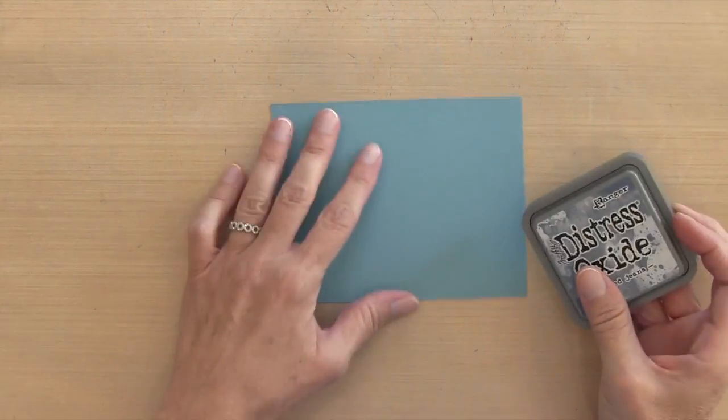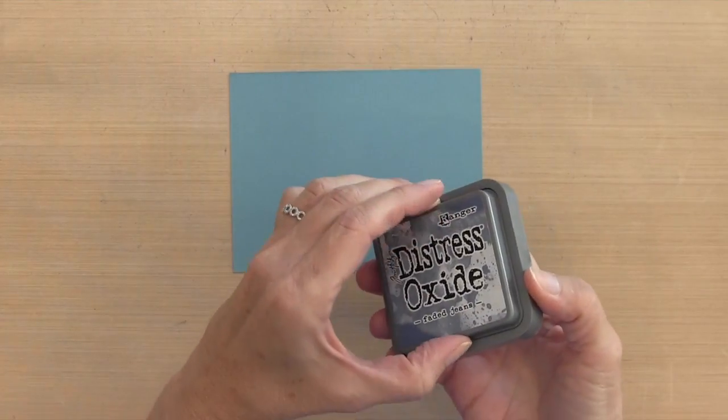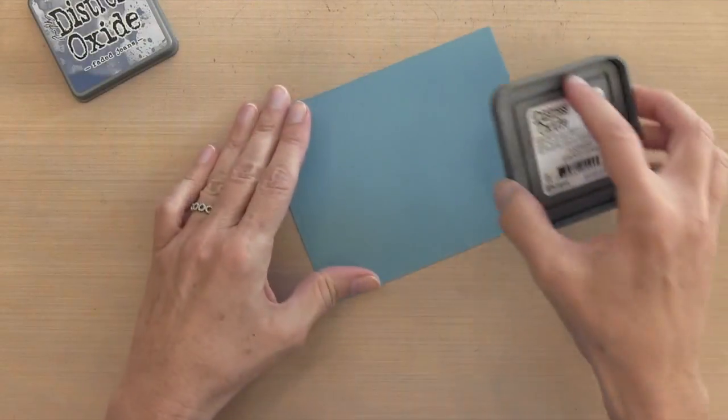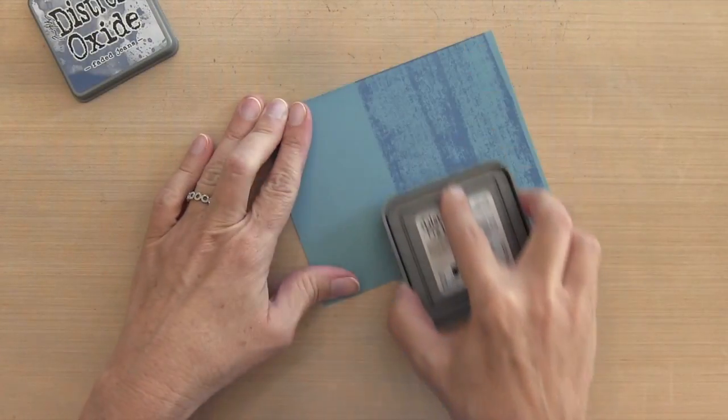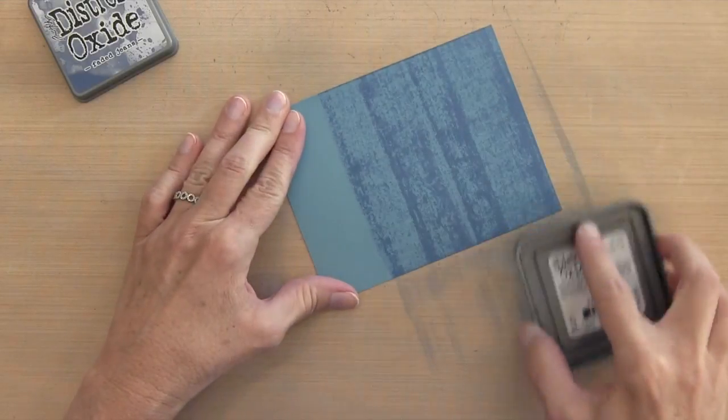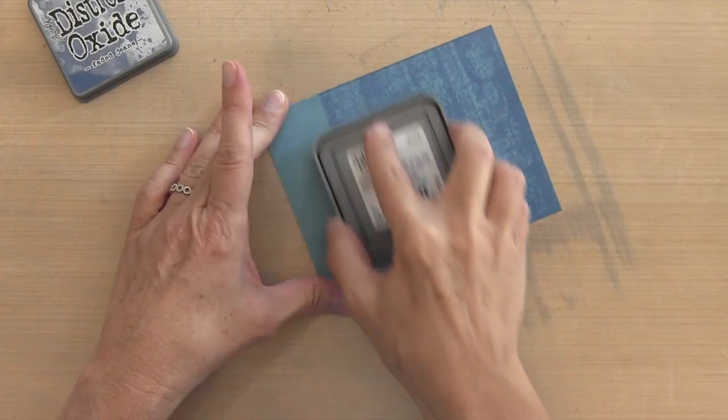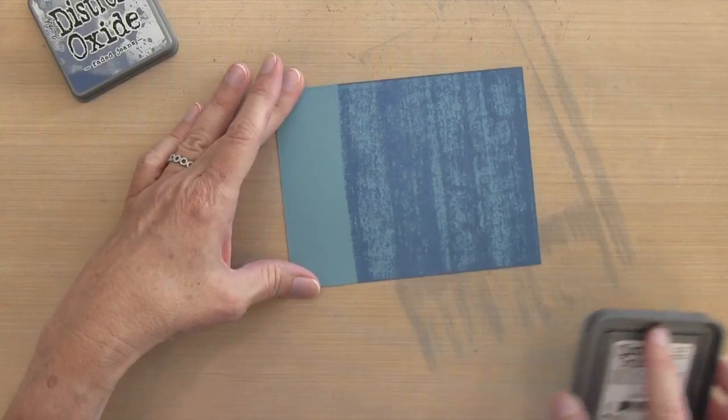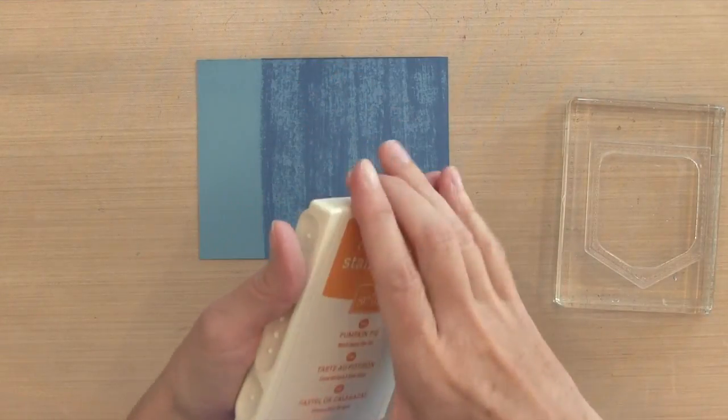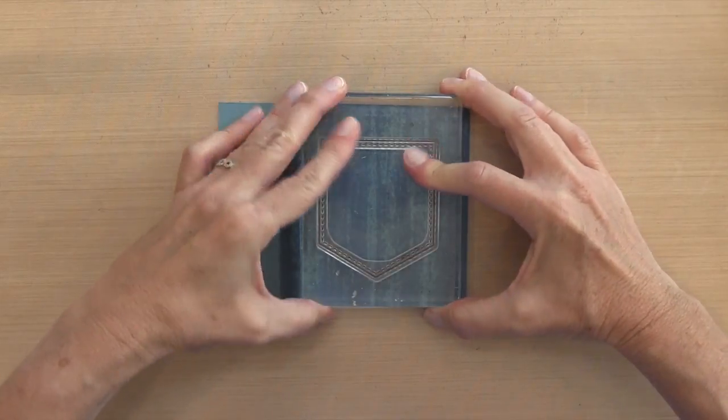I wanted my pocket to look like a jean pocket. So I have Marina Mist cardstock by Stampin' Up and I have faded jeans. I'm just going to do a direct to paper. Notice I'm not pressing too hard because I just want to get kind of a light covering of this faded jeans. I want my stitching to be pretty subtle. So I'm just going to stamp it in some pumpkin pie. Here's my outline.